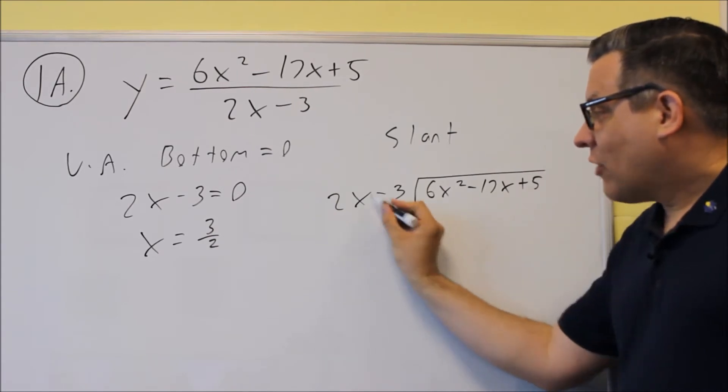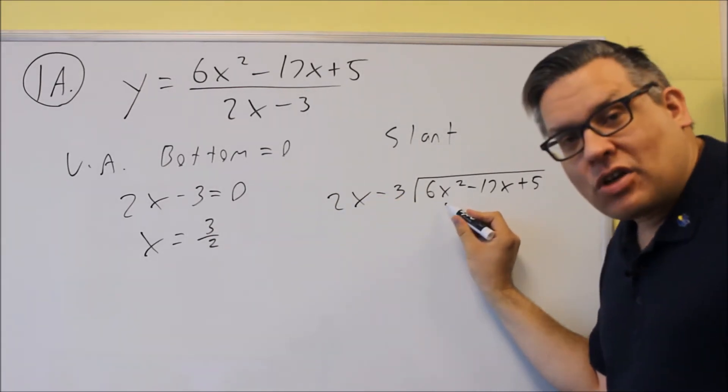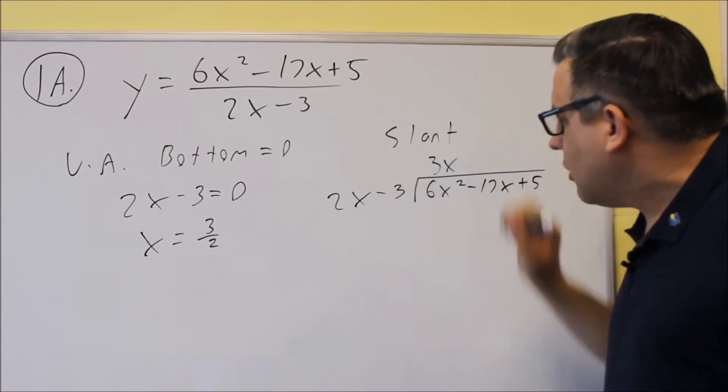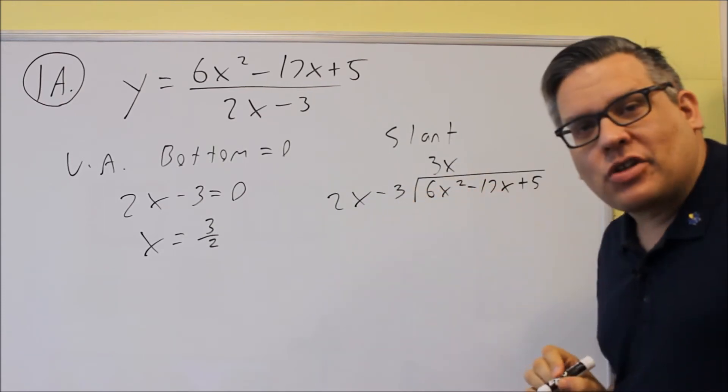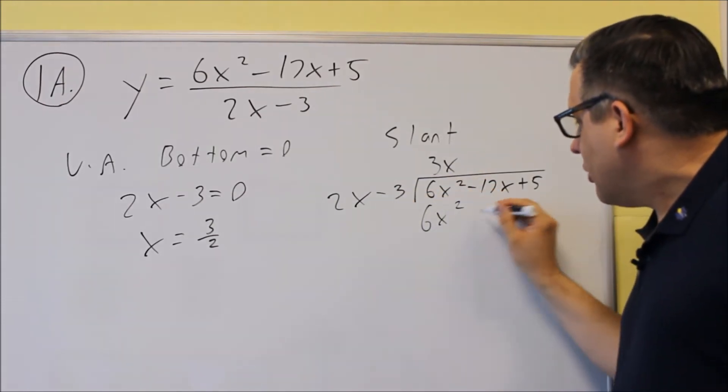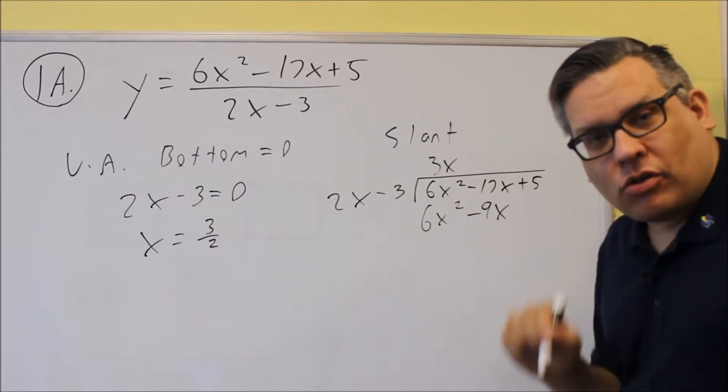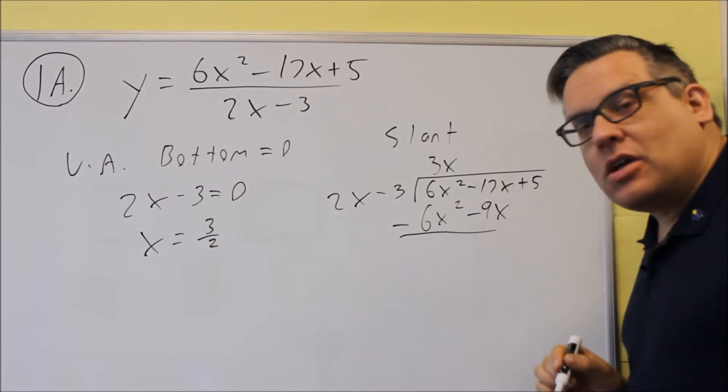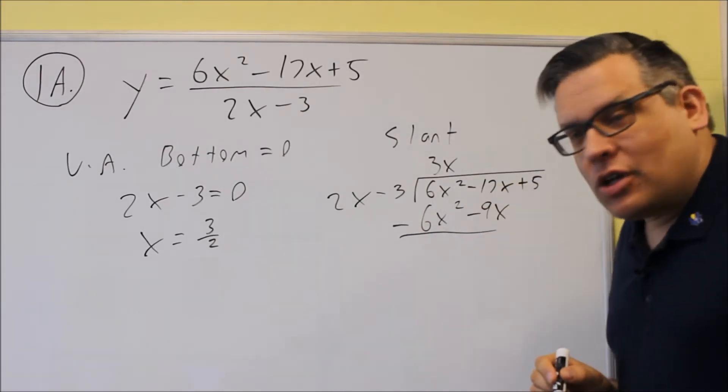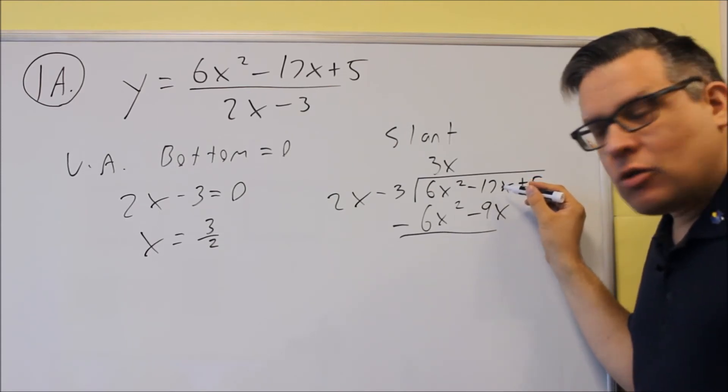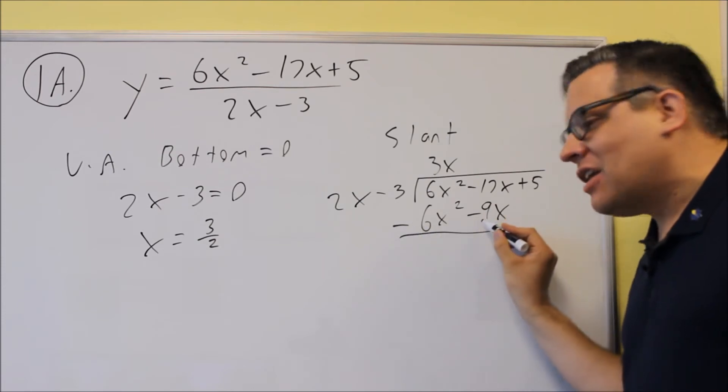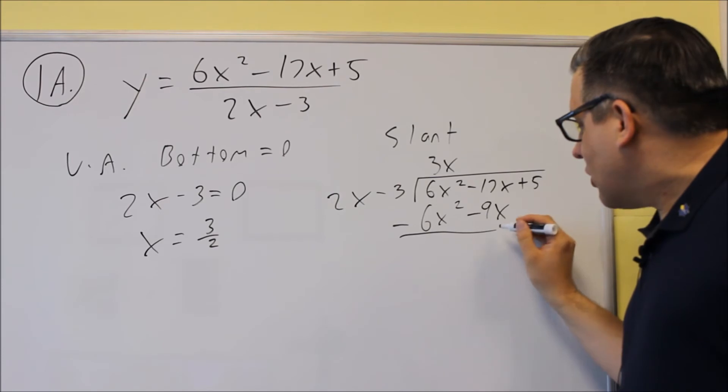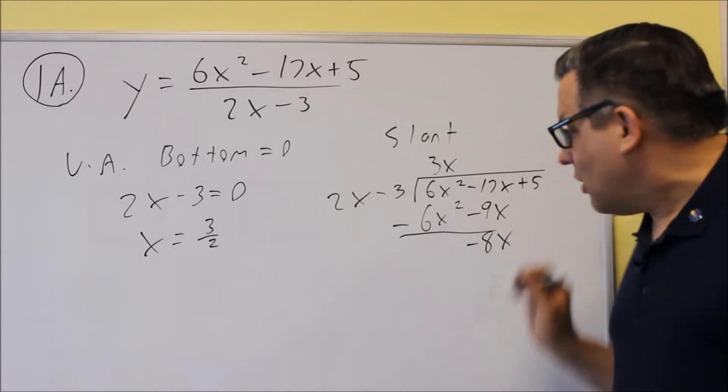You want to ask yourself, what do I have to multiply 2x by in order to get 6x squared? So we need a 3 first of all, and we also need an x, and you're going to multiply that by both things on the outside. So we're going to get 6x squared minus 9x, and with long division you're always subtracting. Synthetic division is adding, this is going to be subtracting. Subtract that, you get zero. Now be careful with your signs here. We've got negative 17 and you're subtracting a negative 9, so you're going to do negative 17 plus 9, and so that's going to give you negative 8x. And then you're going to bring down the next term.